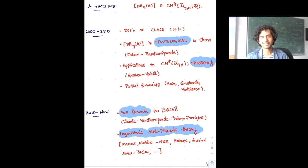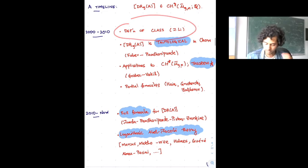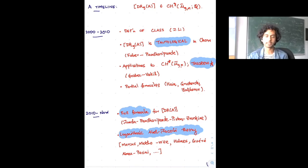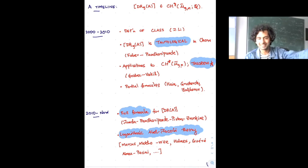The first really significant thing is that the definition I gave really only makes sense because of work of Jun Li on developing relative Gromov-Witten theory in algebraic geometry. The first interesting result is that the cycle lies in the tautological part of the cohomology ring of the moduli space of curves. It also played an important role in work of Graber and Vakil that constrains the intersection theory on M̄_{g,n} — understanding the structure of this cycle constrains the topology of M̄_{g,n} in quite an interesting way.